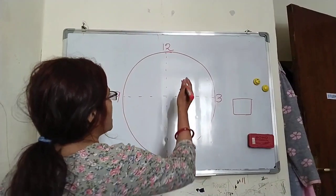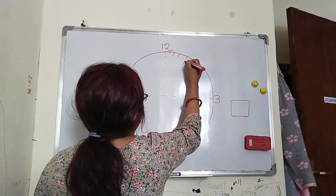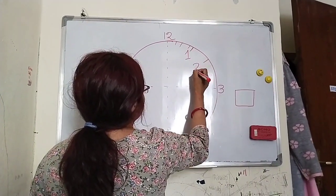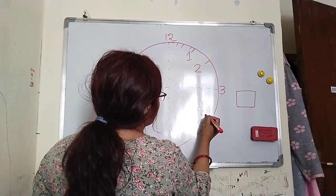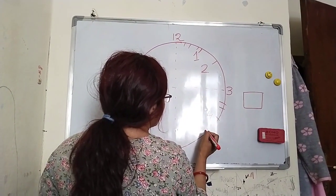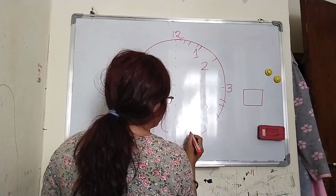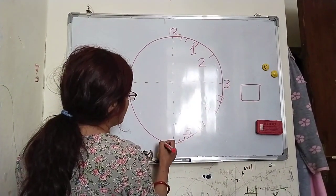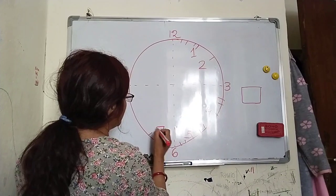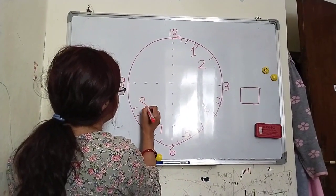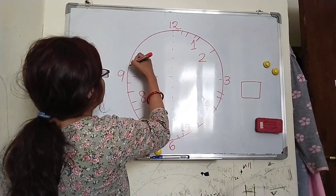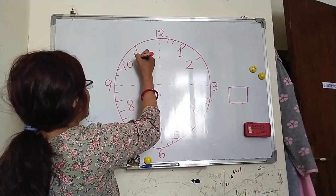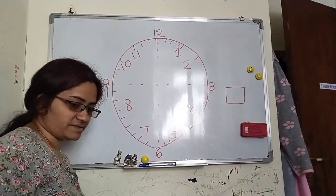In between, I can make 1, 2, 3, 4, 5 — 6 is already there. Then 7, 8 — 9 is there. Now 10, 11, and 12. Understand?